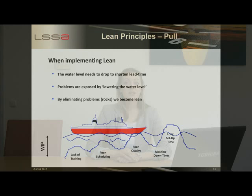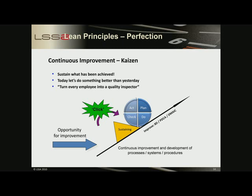You will realize that this process of eliminating waste never ends, so continuous improvement is necessary. To continuously improve, we use a technique called Kaizen. This technique is about sustaining what has been achieved and attempting to do something better every day. Splitting up improvement into small steps makes it possible for all operators on the shop floor to contribute to this process.